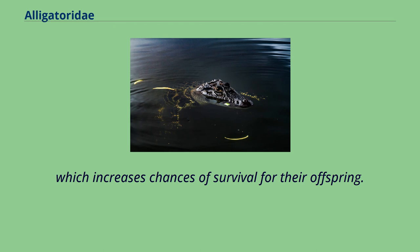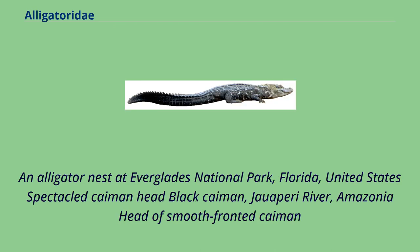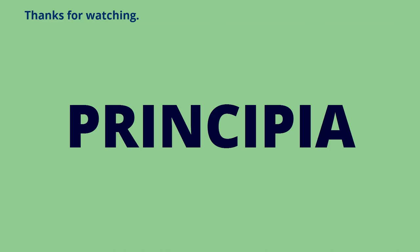An alligator nest at Everglades National Park, Florida, United States. Spectacled caiman head. Black caiman, Rupununi River, Amazonia. Head of smooth-fronted caiman.